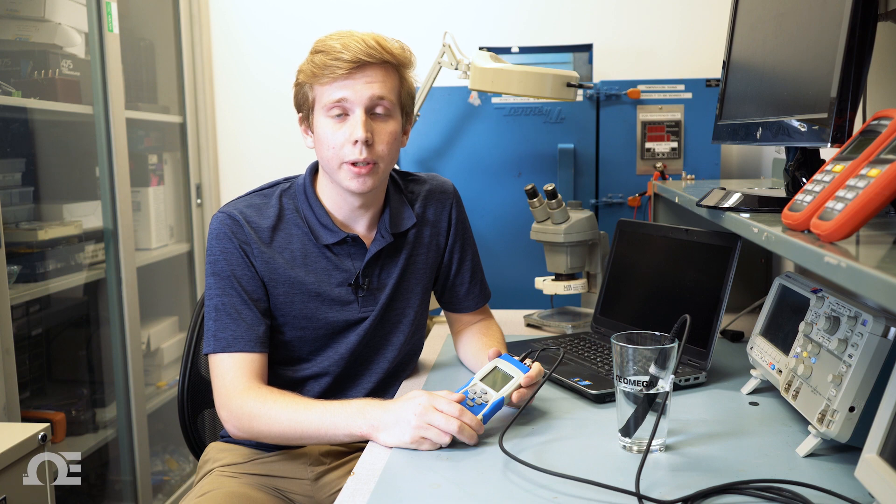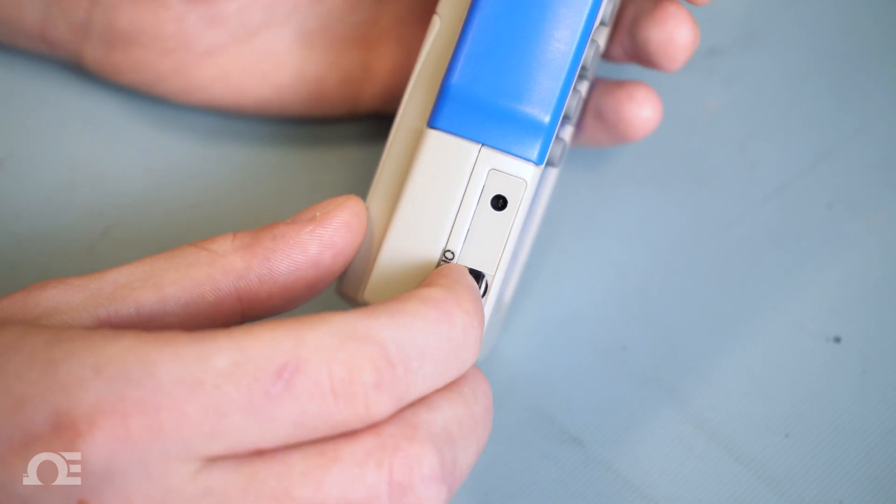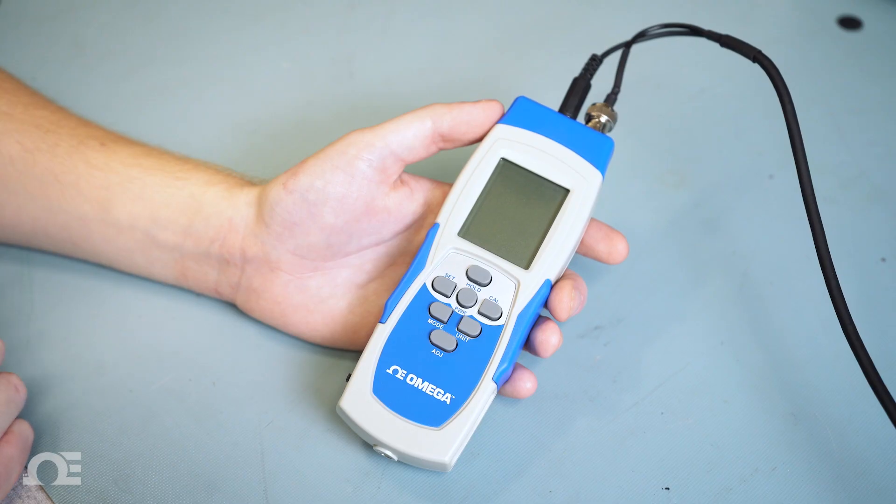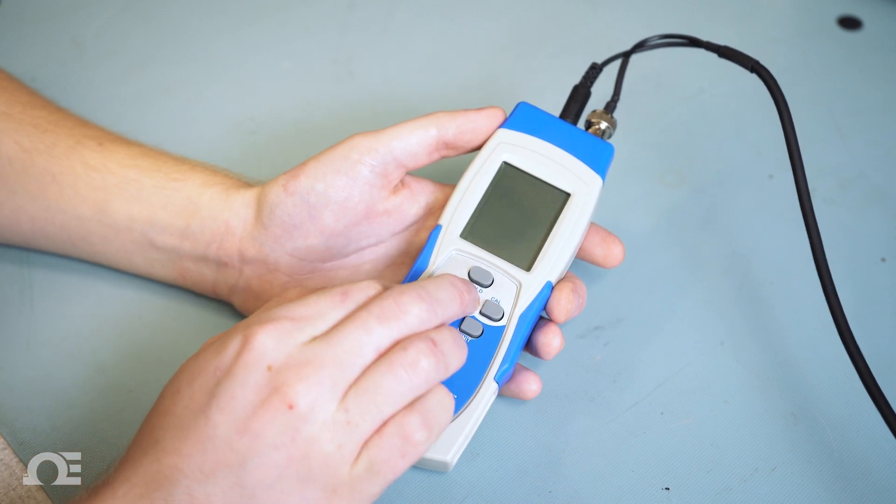Now we're going to configure the unit for data logging. With the power switch on but the unit off, press the mode and power keys simultaneously to enter the time and date settings.